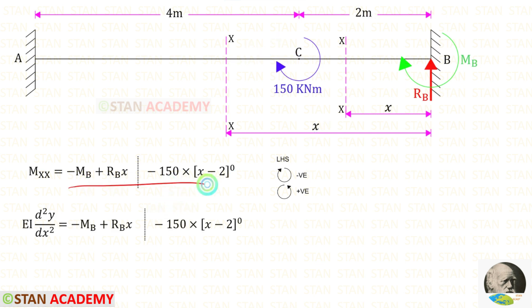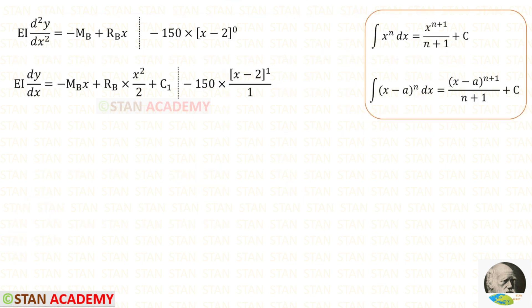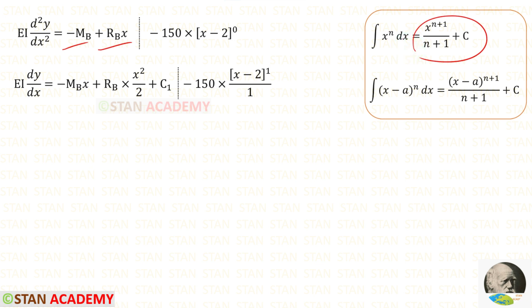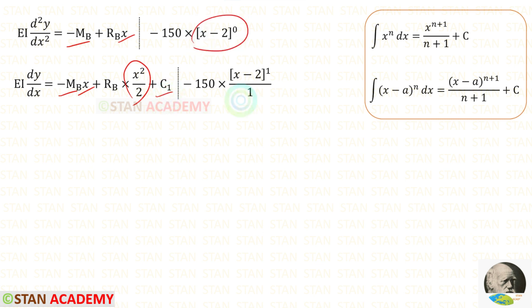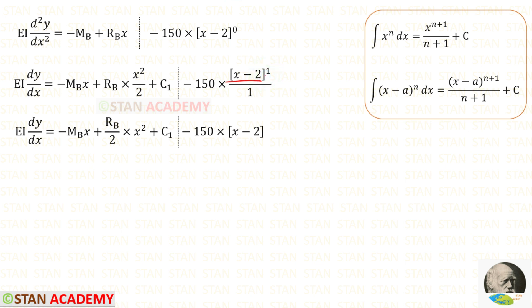Now let us equate M(xx) with EI d²y/dx². Let us integrate both sides. To integrate the first two terms we use the standard formula, and to integrate the moment term we use a separate formula. For the constant term with no X, we multiply by X. When we integrate X it becomes X squared over 2, with C1 as the constant. Integrating X minus 2 to the power 1 over 1 gives X minus 2.